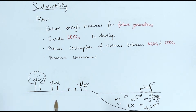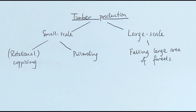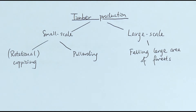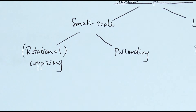When it comes to timber production, we can split it into two major groups: small scale and large scale timber production. Looking at small scale first, we have two methods — coppicing and pollarding.